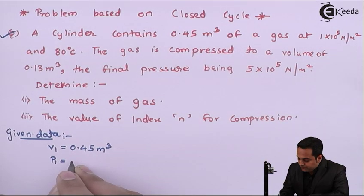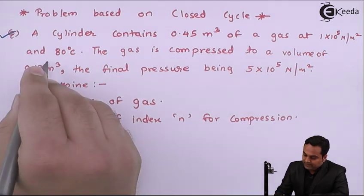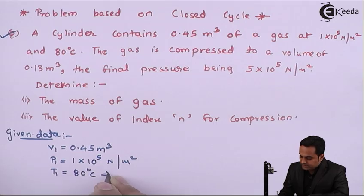pressure, so P1, and 80 degrees Celsius. The temperature T1 is 80°C which I'll convert into Kelvin and it becomes 353 Kelvin.